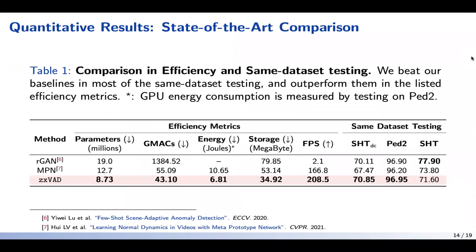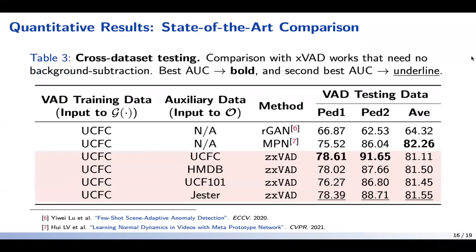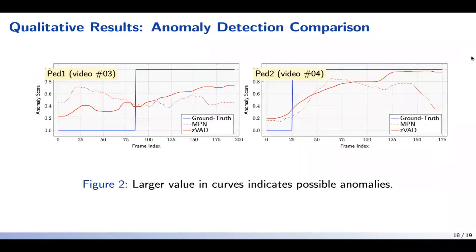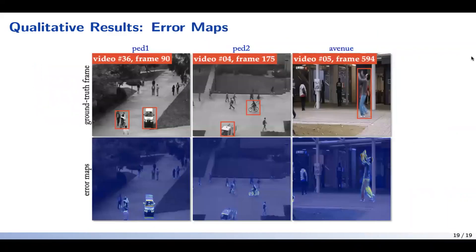Our model in terms of parameters, FLOPs, and energy consumption is extremely more efficient than prior works, but shows strong performance in same-dataset testing, in cross-dataset testing, as well as in the extreme scenario where our model is only trained on a task-relevant dataset. We also show anomaly detection curves compared to a state-of-the-art method, and present error maps detected from our proposed model.